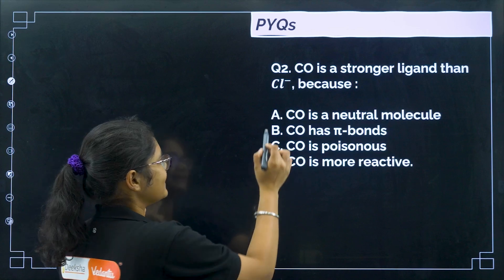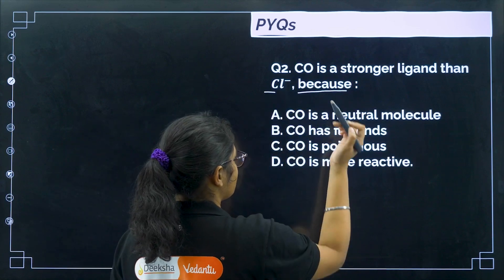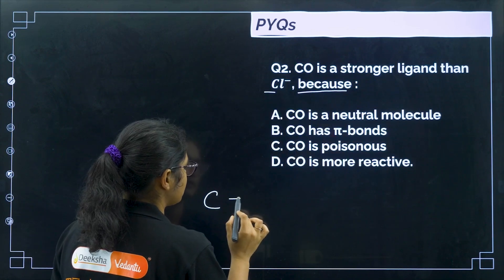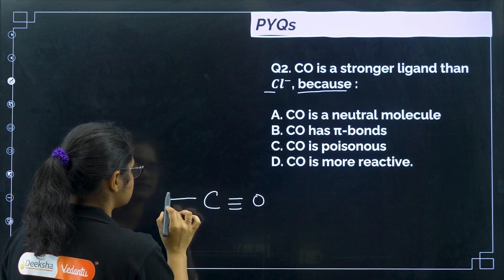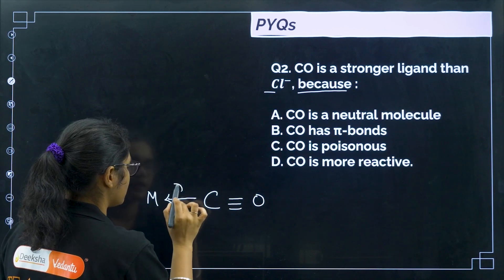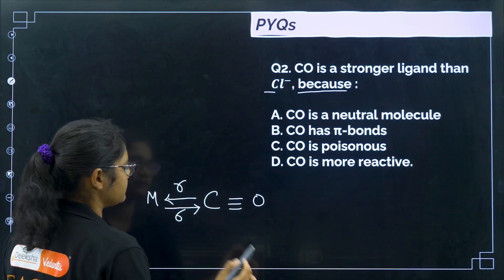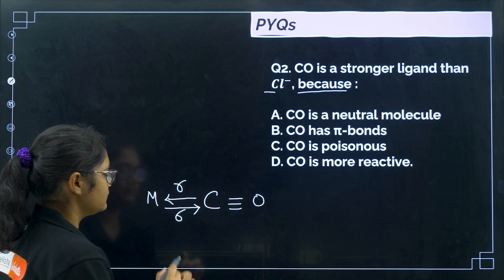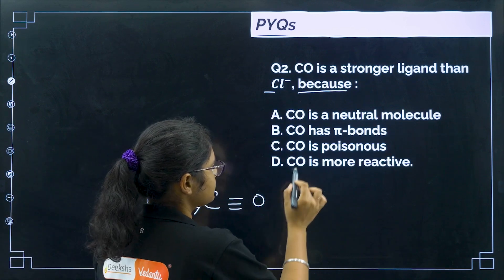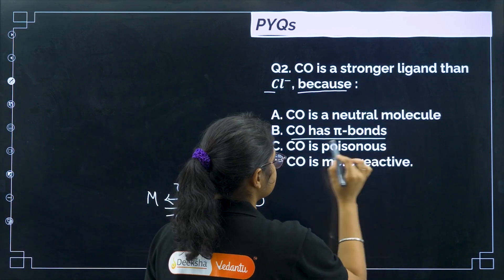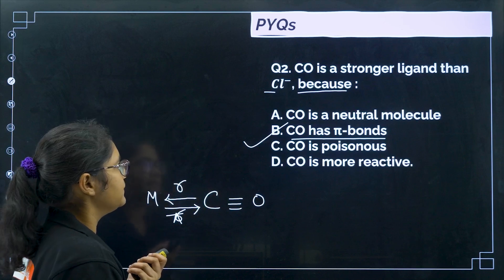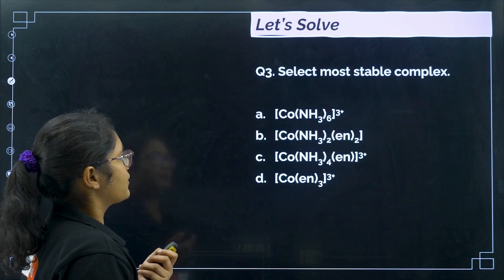Why is CO a stronger ligand than Cl⁻? Because CO forms both a sigma bond and a pi bond with the metal, making the complex more stable. The correct answer is option B.